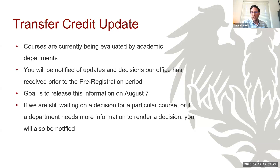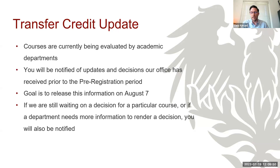A lot of your courses are currently with those departments and we're beginning to receive feedback. We're going to try to get you as much information as possible prior to the pre-registration period, which begins on August 14th. Any decisions we have at that point we'll let you know. If a department hasn't gotten back to us on a particular course, that will be noted. If there's more information we need from you, we'll let you know as early as possible. Our goal is to release this information to you on August 7th, about a week prior to pre-registration.